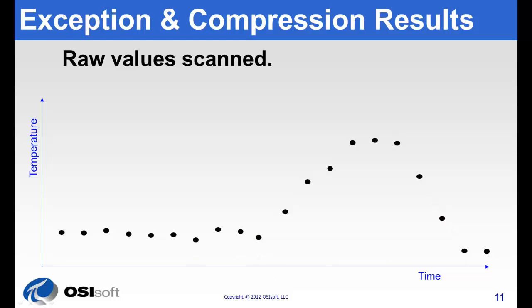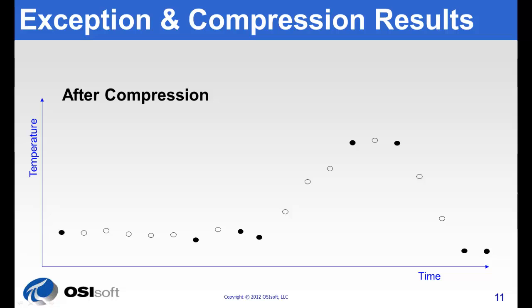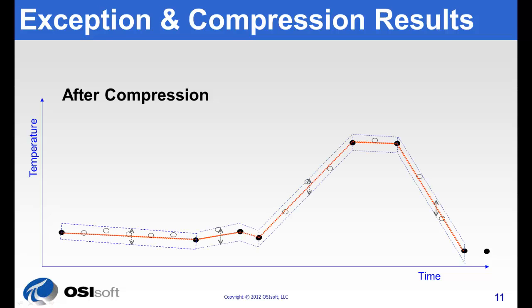So we see the raw values scanned at the data source, what passed exception, what passed compression, the trend that will be drawn in PI Process Book or PI Coresight. And we can see that all the raw values fall within the dead band setup by compression deviation.